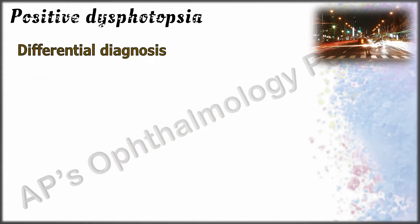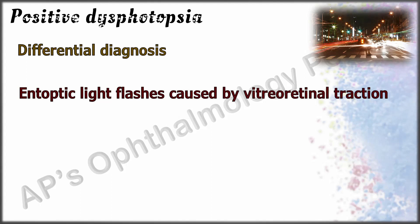Differential diagnosis of positive dysphotopsia includes entoptic light flashes caused by vitreoretinal traction. These entoptic phenomena are triggered by eye movements and might occur under dark conditions, unlike positive dysphotopsia which require an external light source to induce symptoms.